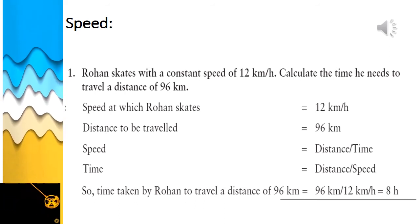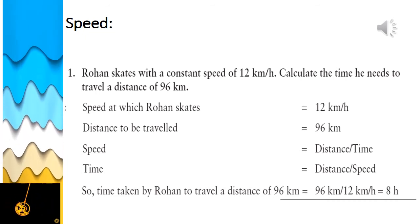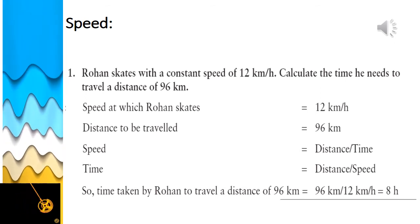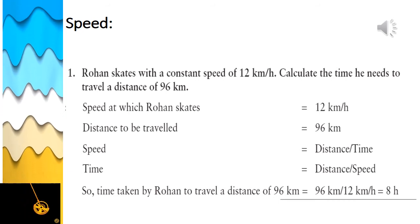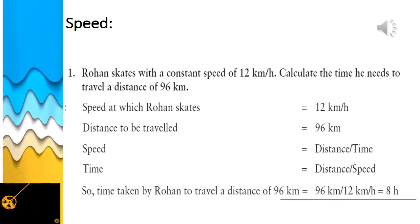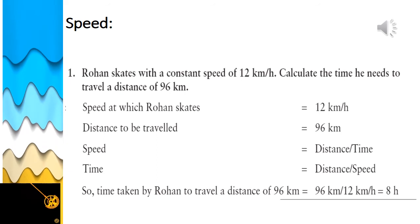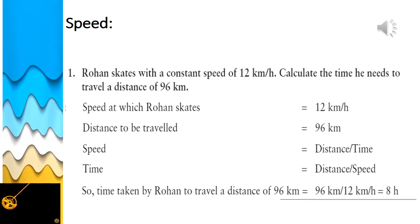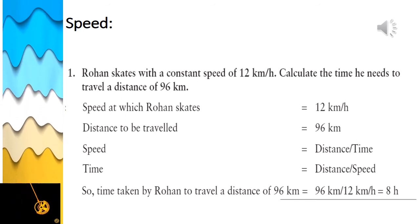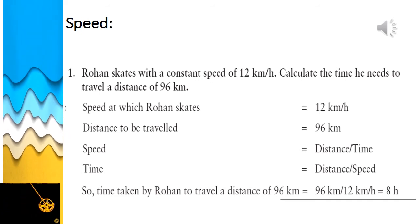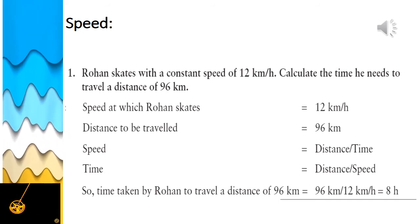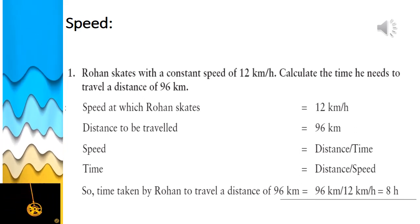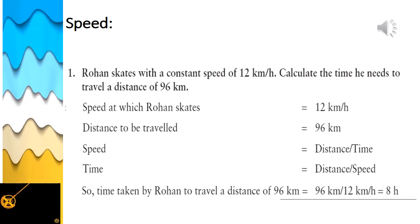Let's solve a problem. Rohan skates with a constant speed of 12 kilometers per hour. Calculate the time he needs to travel a distance of 96 kilometers. What is given: speed = 12 km/h, distance = 96 km. We need to find the time taken to cover that distance.